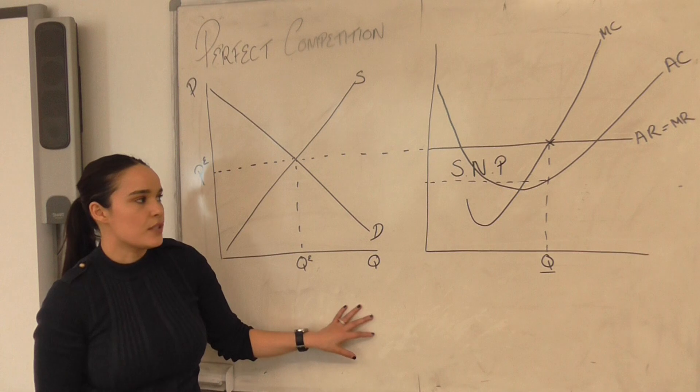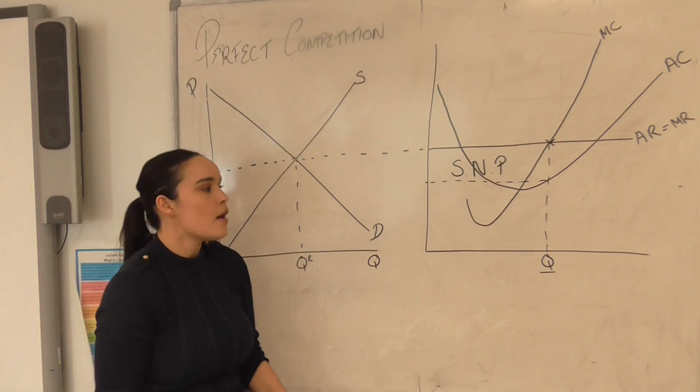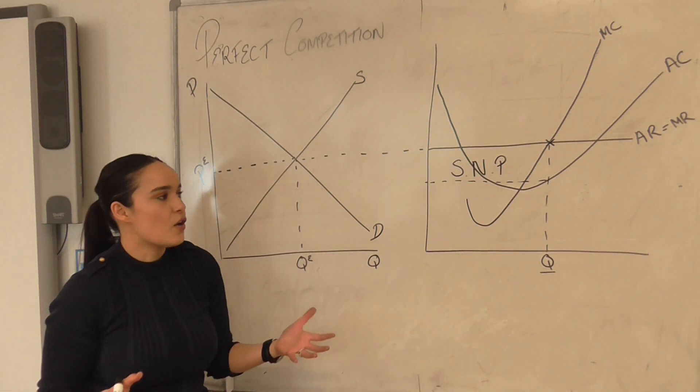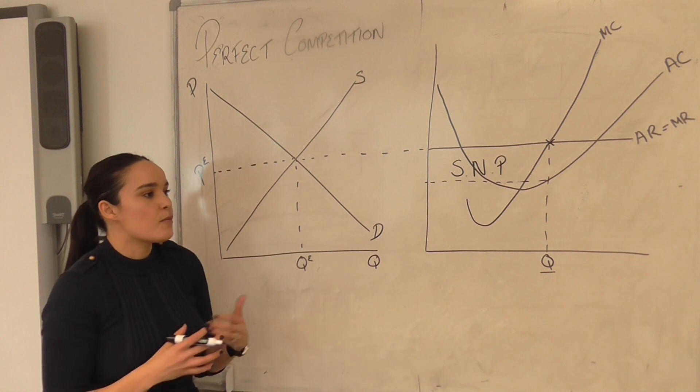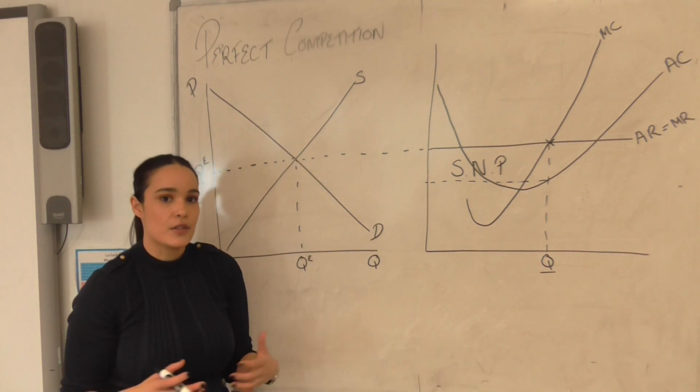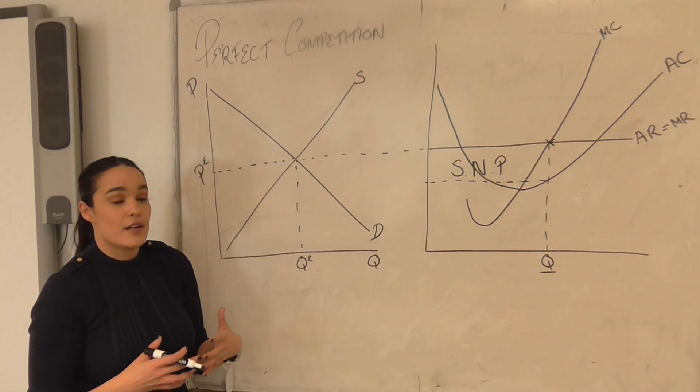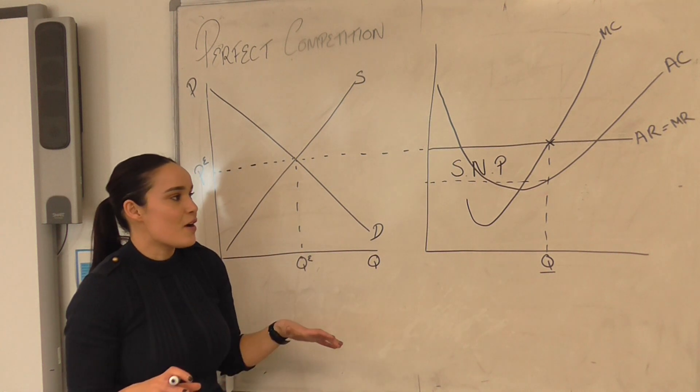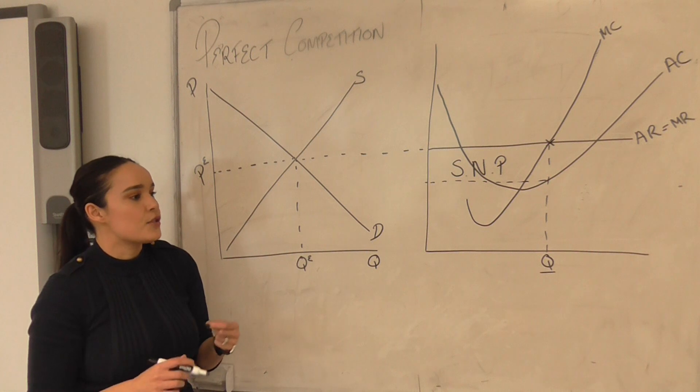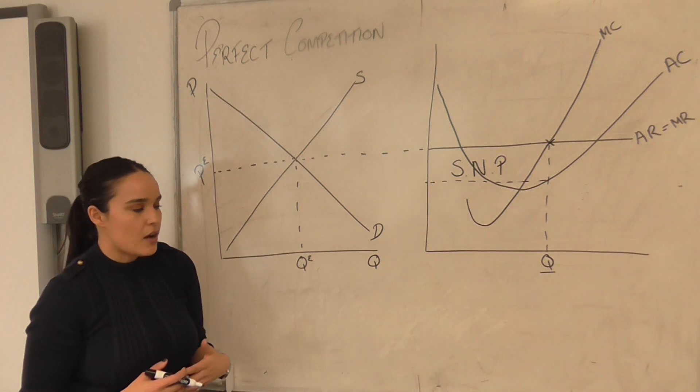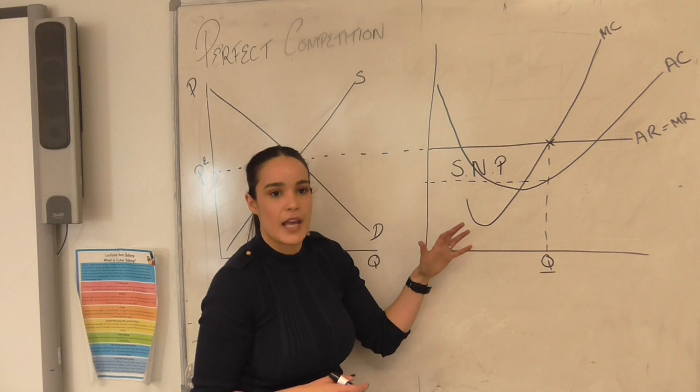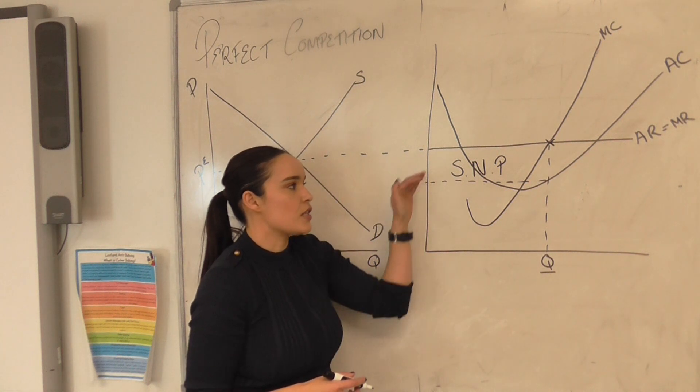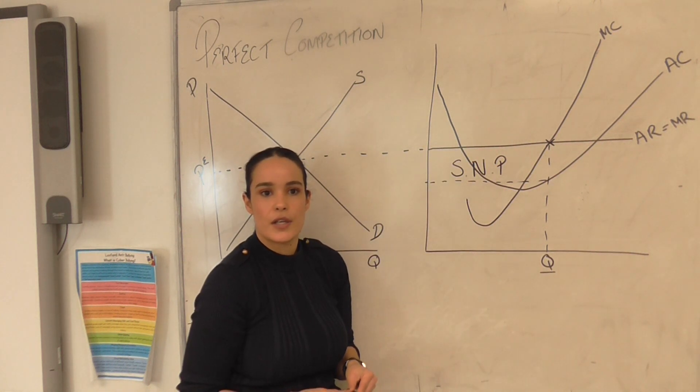So firms in the short run are able to make supernormal profit under perfect competition, but actually because of some of the characteristics that doesn't last for particularly a long amount of time. So supernormal profit we know acts as a signal in the market. Producers outside of the market, potential producers, are able to see into the market, there is perfect knowledge in the market, perfect information, which means that producers or potential producers outside the market are able to see that firms are making supernormal profit. And supernormal profit acts as a signal to those individuals to enter the market and to take advantage of a potential supernormal profit that they too can earn.